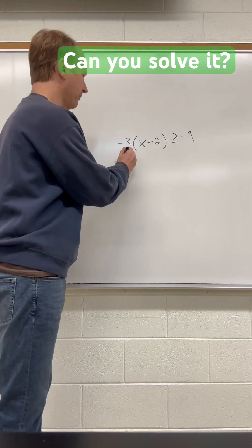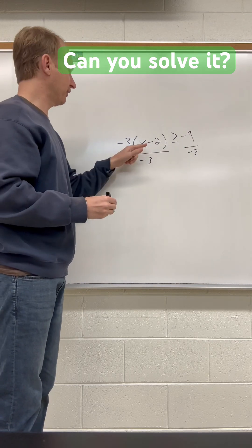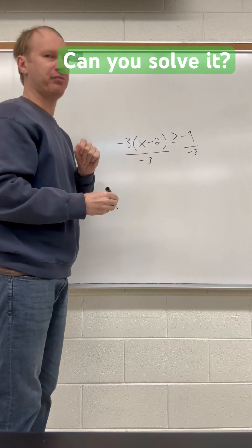You save a step if you just divide both sides by negative 3. This is saying negative 3 times the quantity x minus 2, so divide both sides by negative 3.